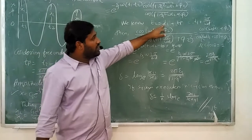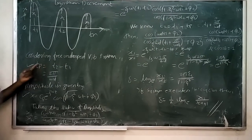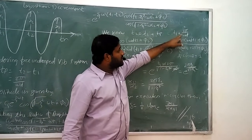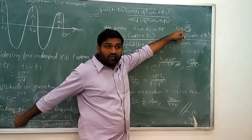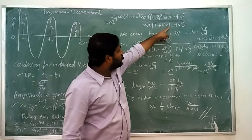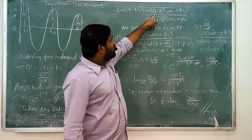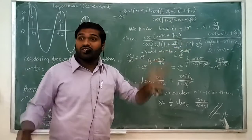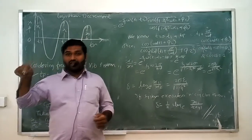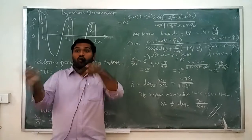We know that t2 = t1 + tp, and tp = 2π / ω_d. So t2 = t1 + 2π / ω_d. Substituting this value of t2 into the equation, and noting that √(1 − ζ²) · ω = ω_d (where ω_d = ωn · √(1 − ζ²)), we can write ω_d directly instead of expanding the square root term.